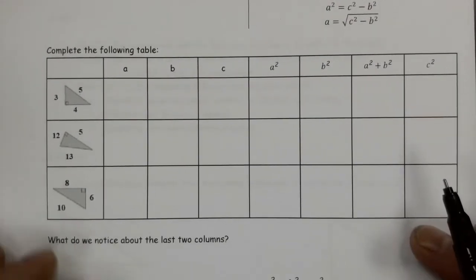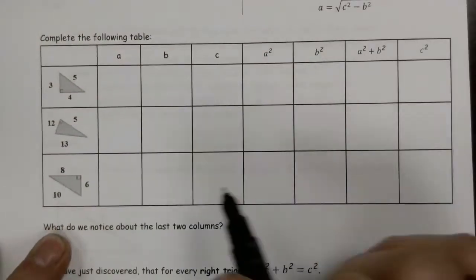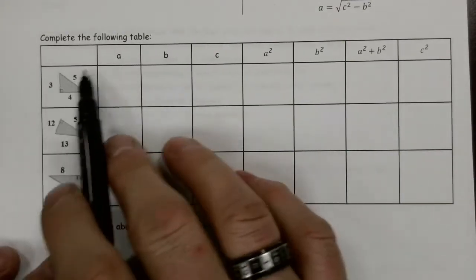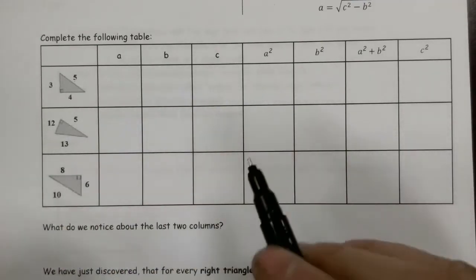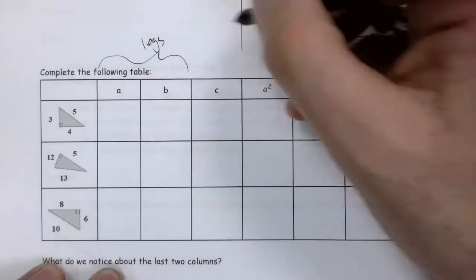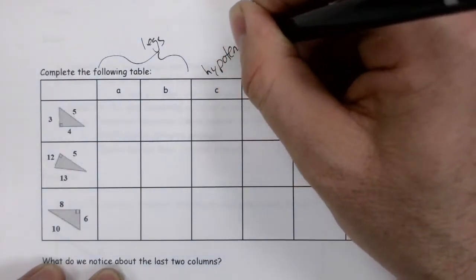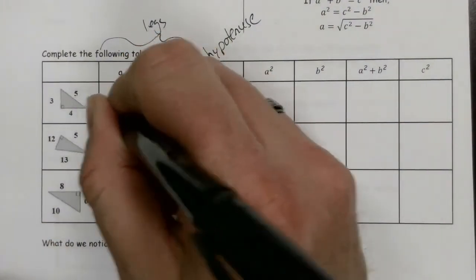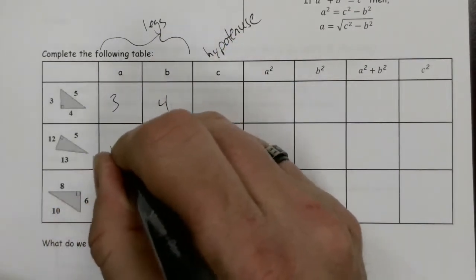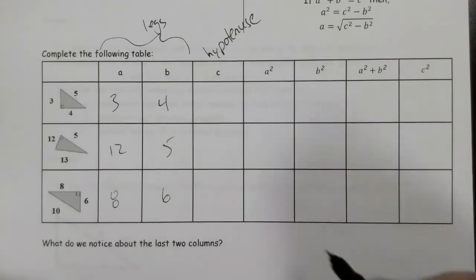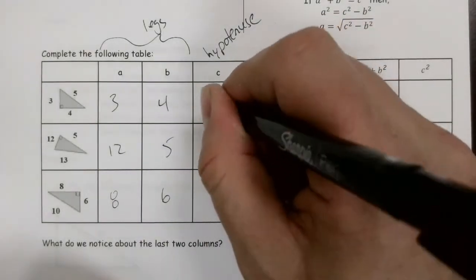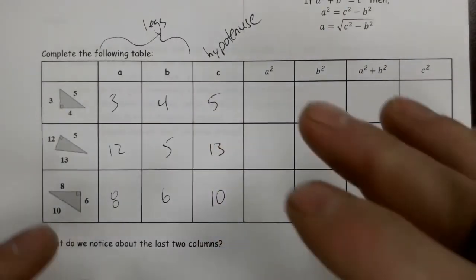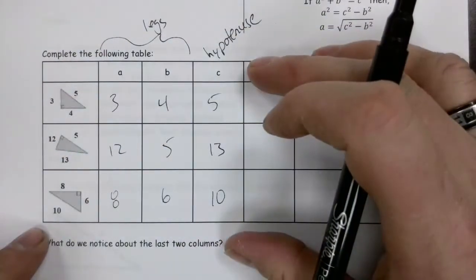Now, just to demonstrate that this relationship holds, let's take a look at some right-angled triangles. If a and b are the legs and c is the hypotenuse, the legs here are three and four, with hypotenuse five; twelve and five with hypotenuse thirteen; and eight and six with hypotenuse ten.